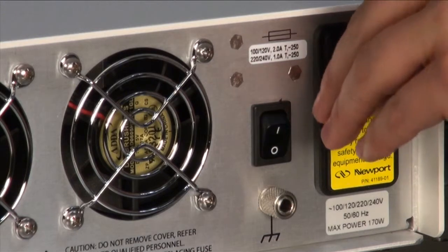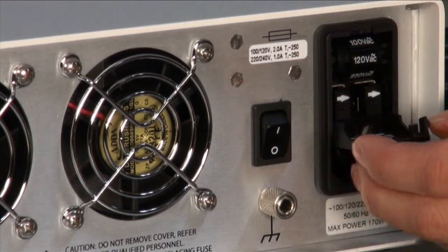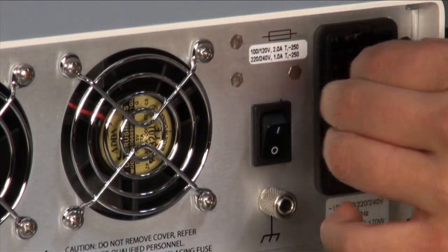As a reminder, there should be a yellow sticker covering the power socket and fuse box. First, remove the yellow sticker and open the cover. Next, carefully remove the drum.